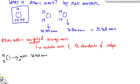Its percent abundance is 75.77%. That means 75.77% of all chlorine isotopes are chlorine-35 isotopes.